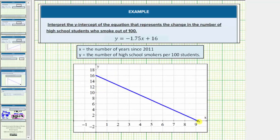The x-intercept, which we said was approximately 9, which means 9 years after the year 2011, giving us the year 2020. I hope you found this helpful.